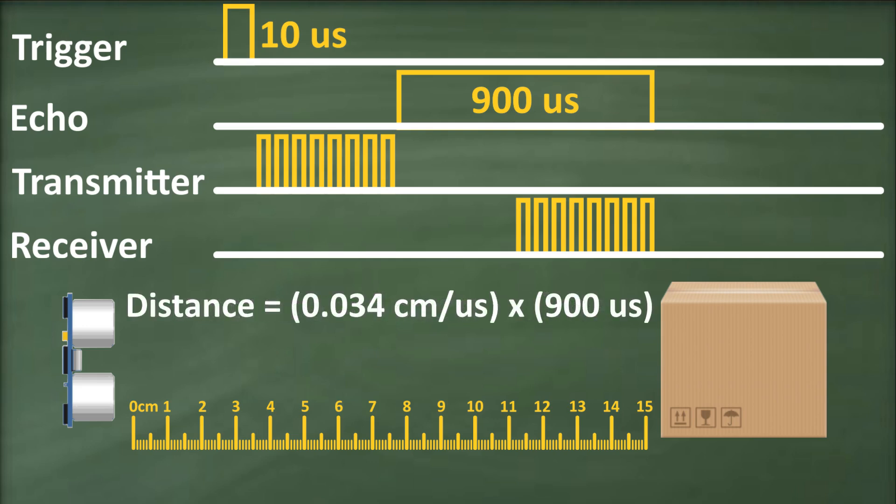With the time value of 900 microseconds and the speed of sound at 0.034 centimeters per microsecond, we can calculate the distance in centimeters. However,